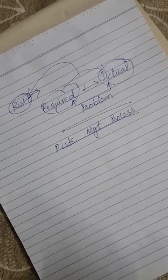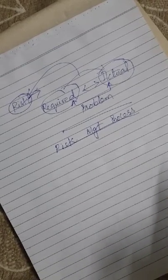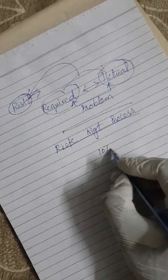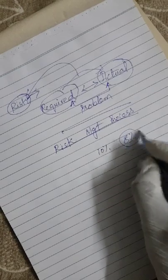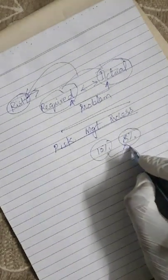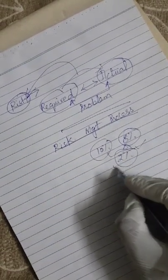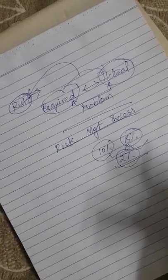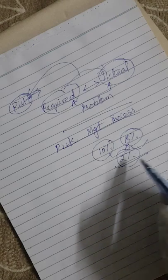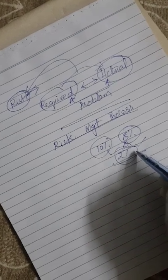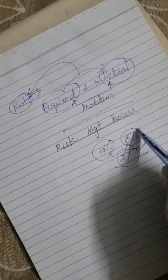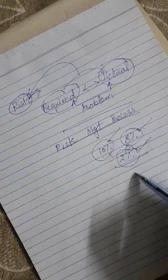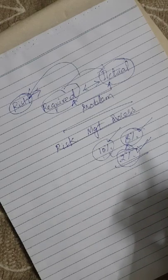For example: you require a 10% return but the market return could be 8%. That means there is a chance a 2% difference will arise. Risk management is basically the activity in which you want to deal with that 2%. The actual activity can be 8%, the required activity will be 10%, and the difference of 2% is your risk management concern.